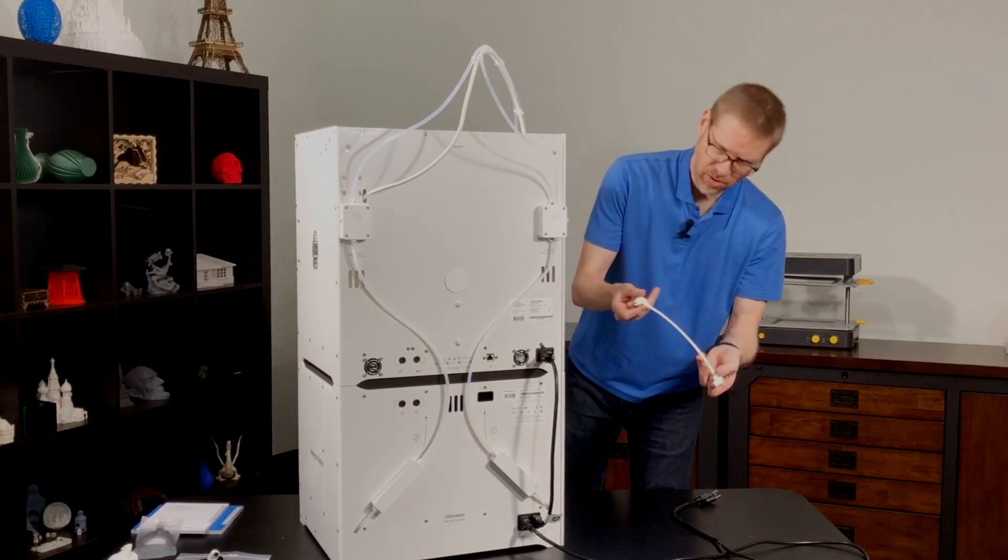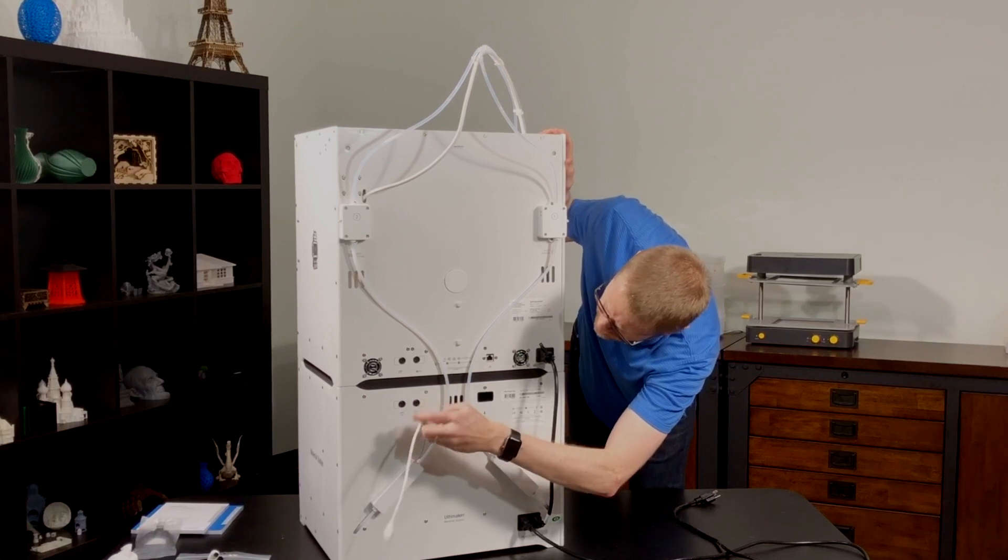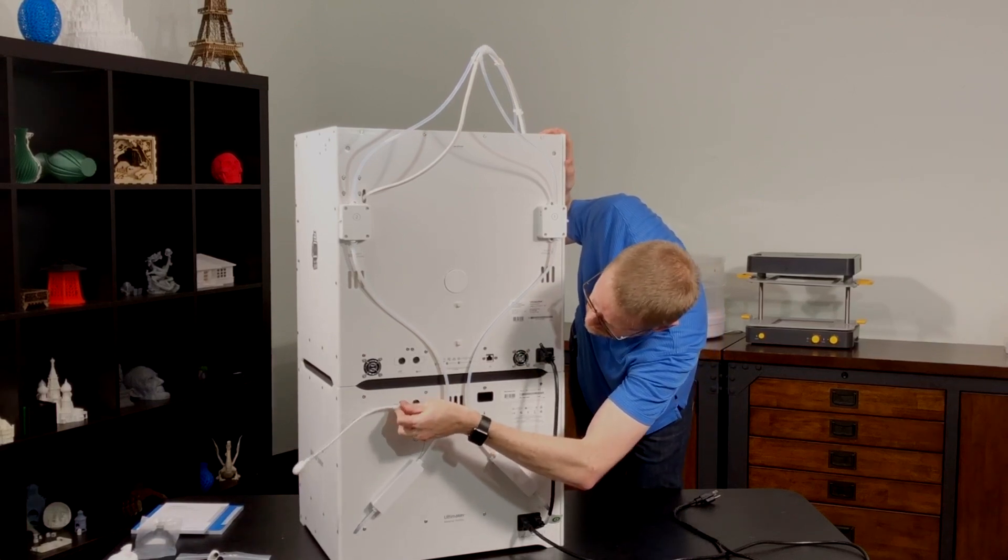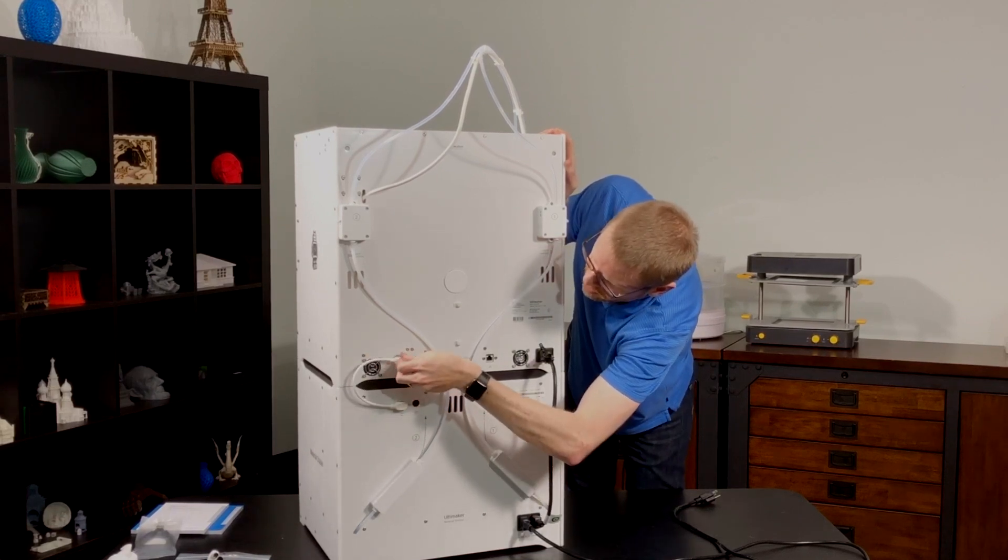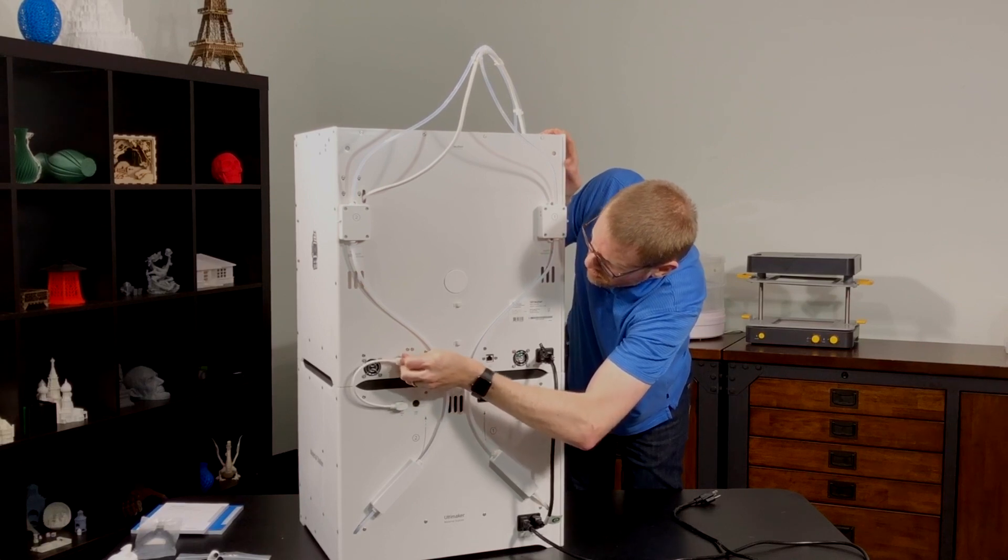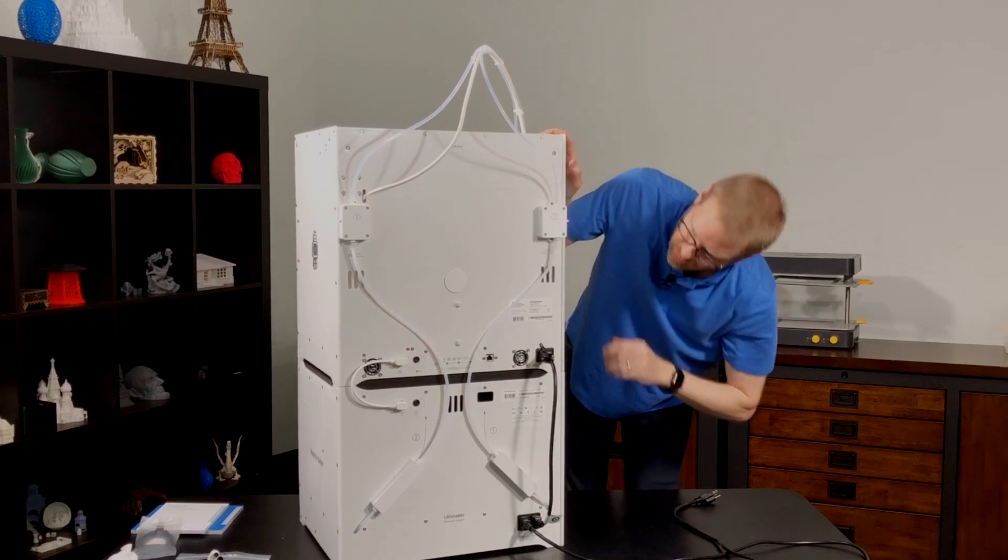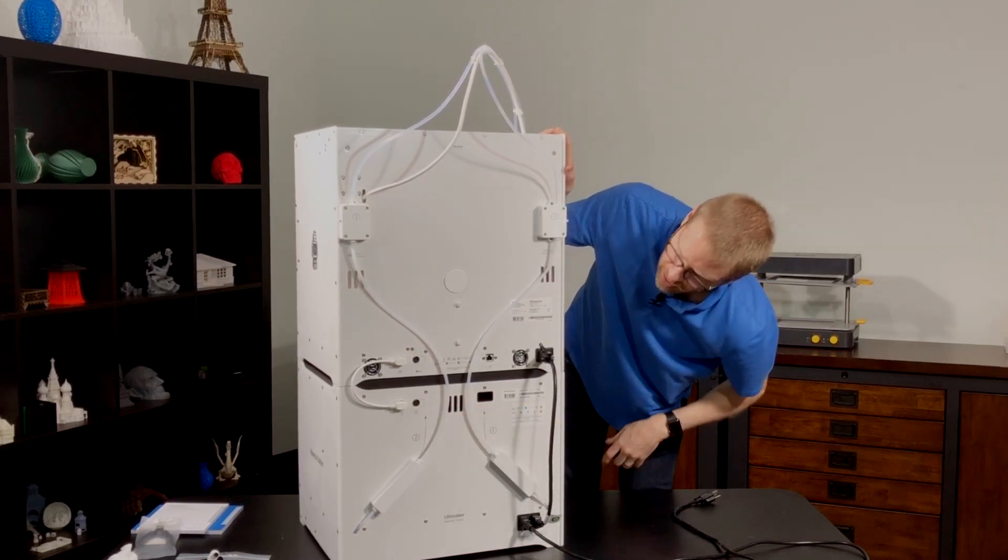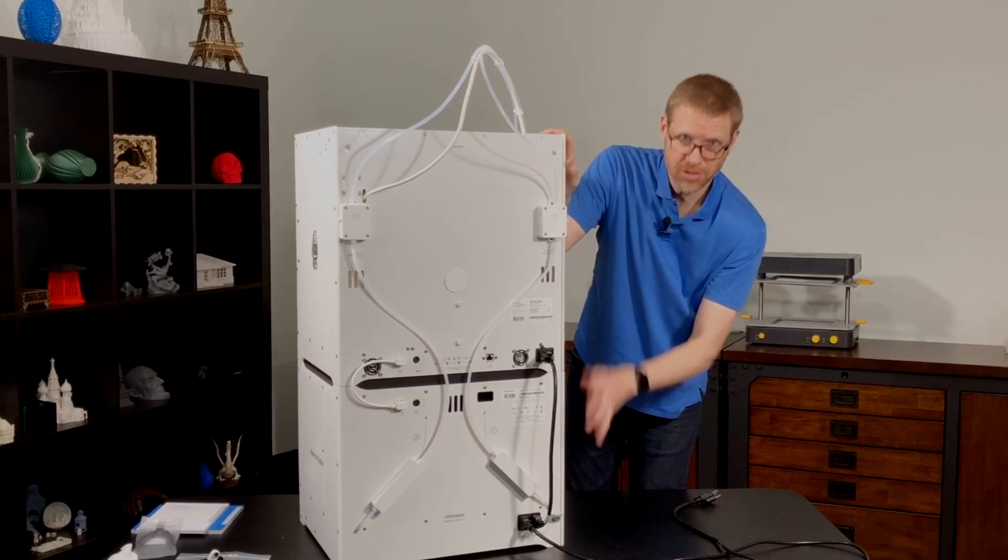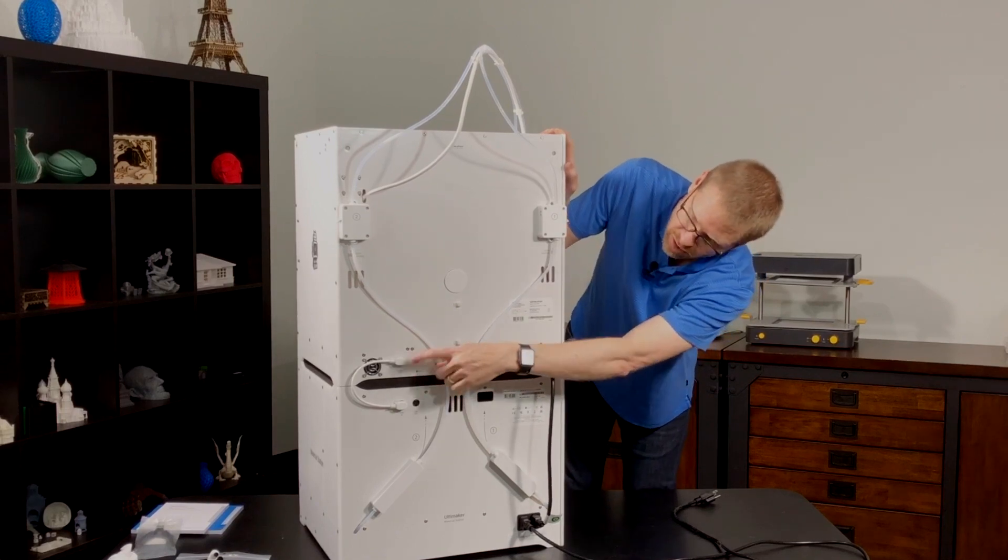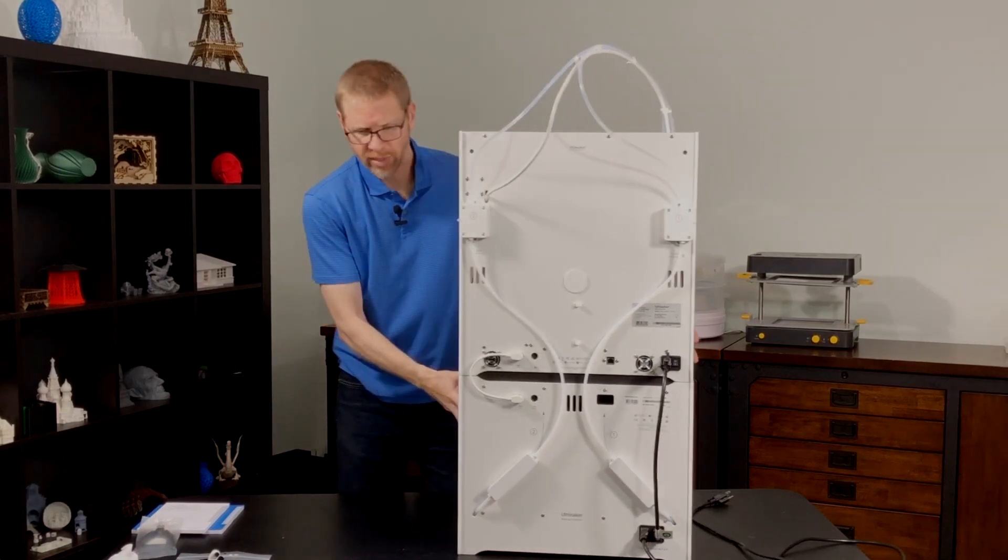Now we have our UMB cable. This is the Ultimaker bus. And this will go to the UMB in on the material station, to the UMB out on the S5. And then our air manager, once we get that up on top, is going to connect to the UMB out port on the material station. If we were not using the material station, if you opted just to get the air manager, then in that case your air manager would plug directly into the UMB out on the S5. So let's go ahead and get our air manager components now.